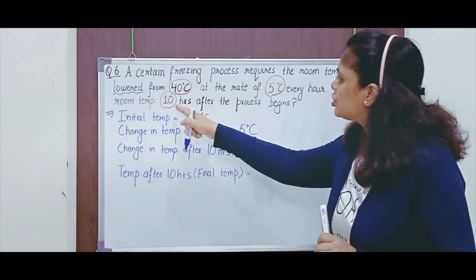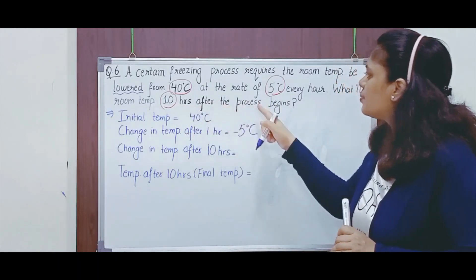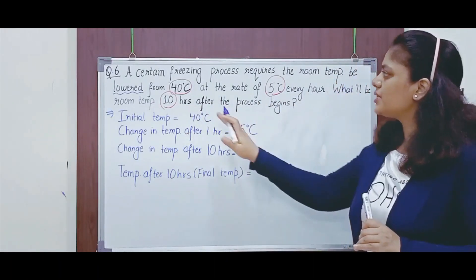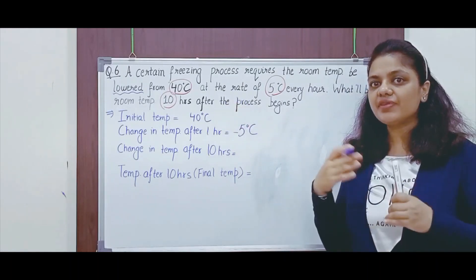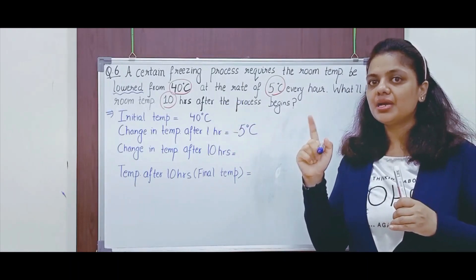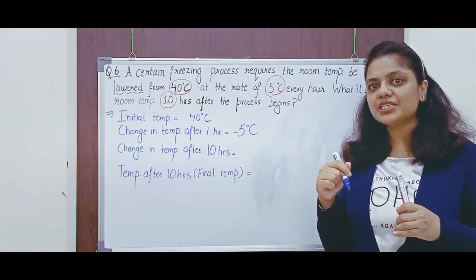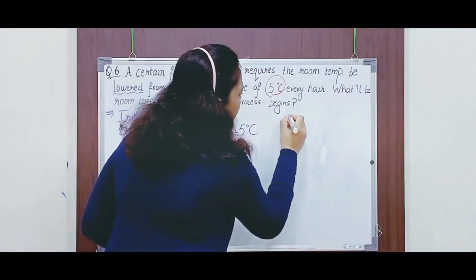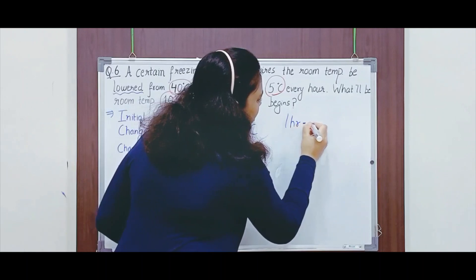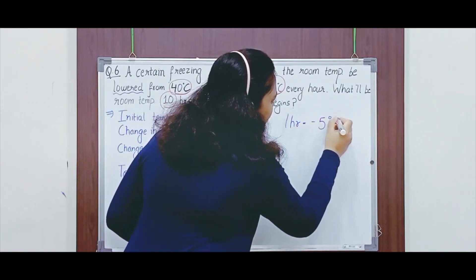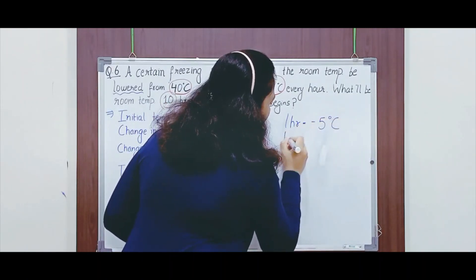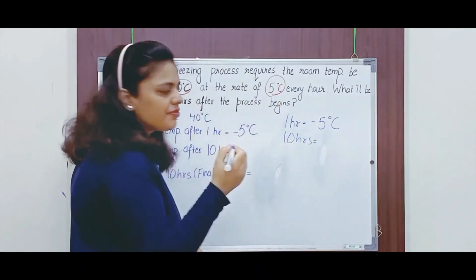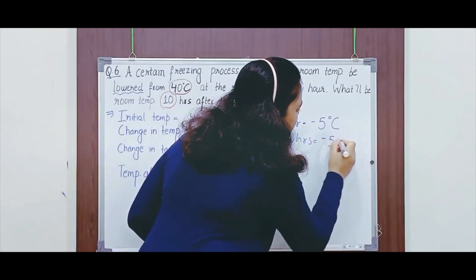What will be the room temperature 10 hours after the process begins? Since the temperature is getting lower at the rate of 5 degrees Celsius every 1 hour, what will be the change in temperature after 10 hours? In 1 hour it is minus 5 degrees Celsius, so the change in 10 hours would be 10 into minus 5, which is minus 50 degrees Celsius.